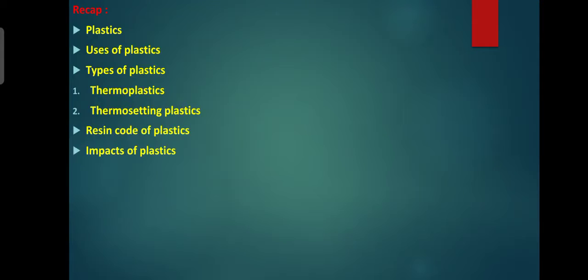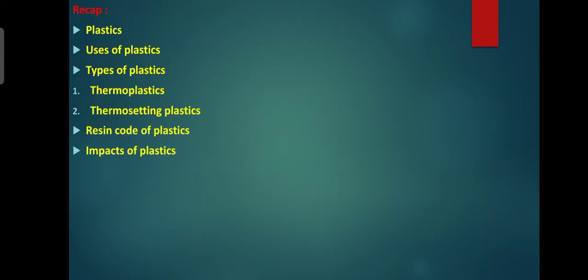On the other hand, there are some plastics which, once they are molded, cannot be softened through heating. These are called thermosetting plastics. Bakelite and melamine are some examples of thermosetting plastics.